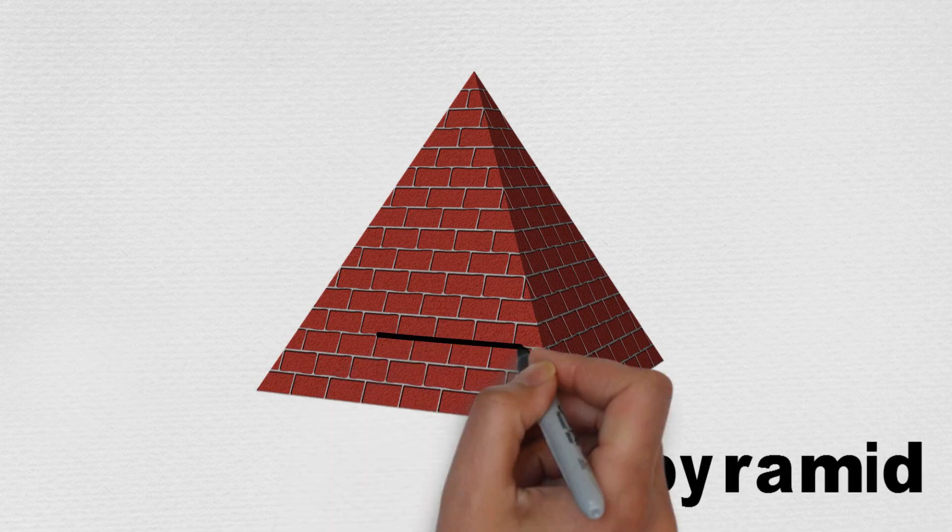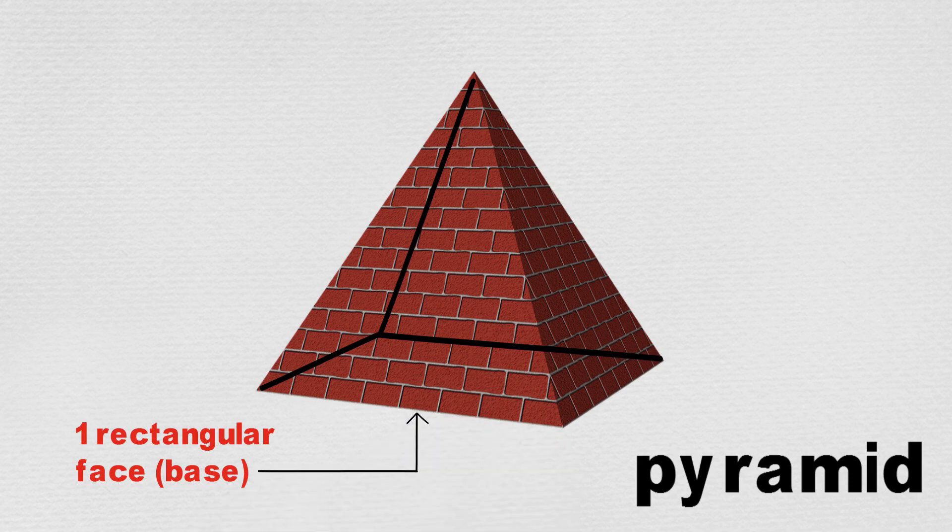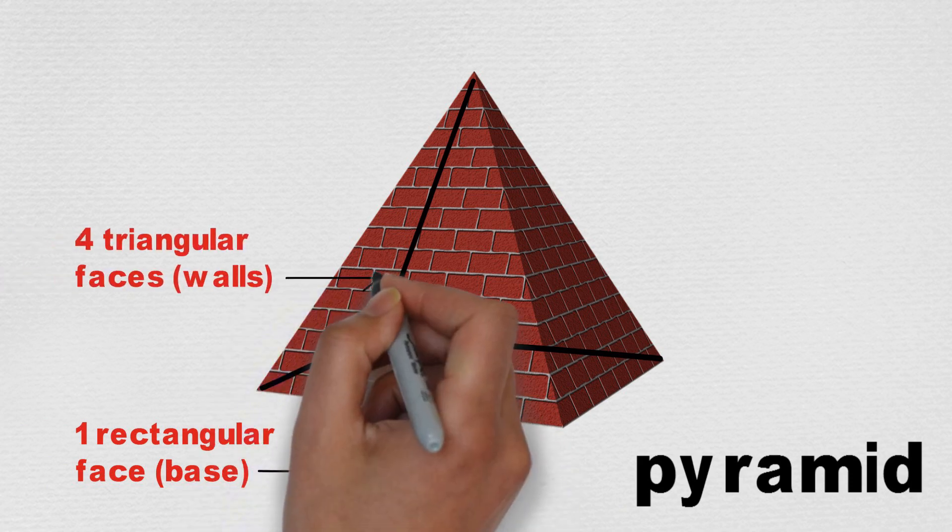This pyramid has five faces, which are all 2D shapes: a rectangular base and four triangles.